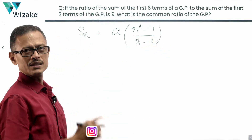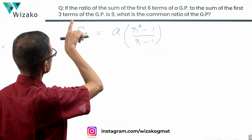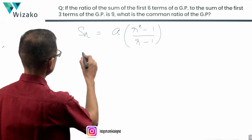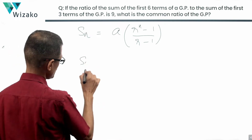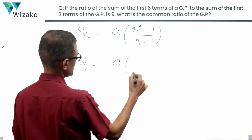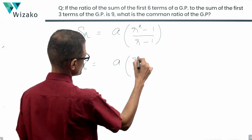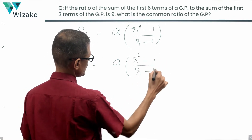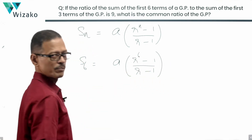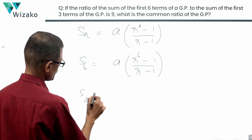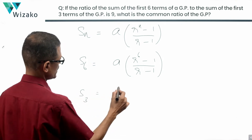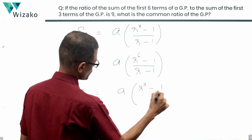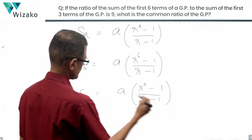The ratio of the sum of the first six terms to the sum of the first three terms equals nine. S6 equals a times (r to the power of 6 minus 1) divided by (r minus 1). S3 equals a times (r cubed minus 1) divided by (r minus 1), where n equals 3 and n equals 6 respectively.